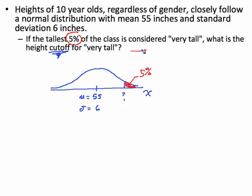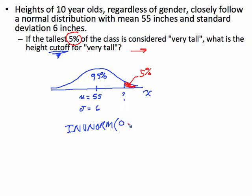To figure that out, we're going to use invNorm, or inverse norm. For invNorm, I need to put in the area from the left — so instead of 5%, I put in 95%, that is 0.95, with mean 55 and standard deviation 6.